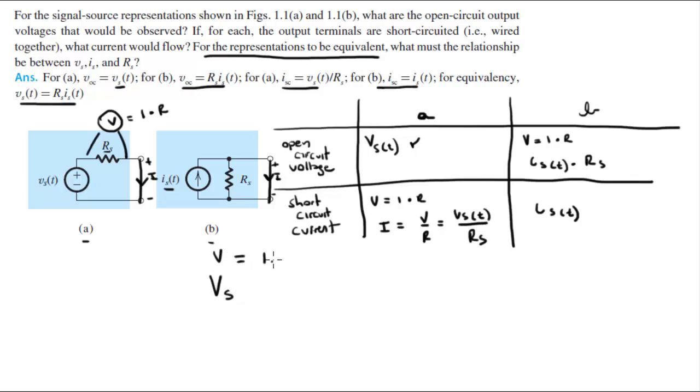Ohm's law is V equals I times R, like I said many times. VST is equal to IST times RS. So that is the relationship required for all these representations to be equivalent.